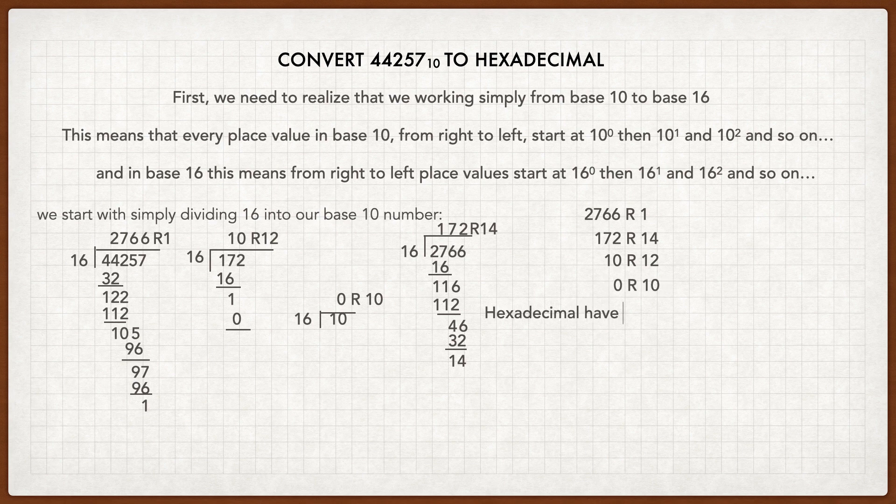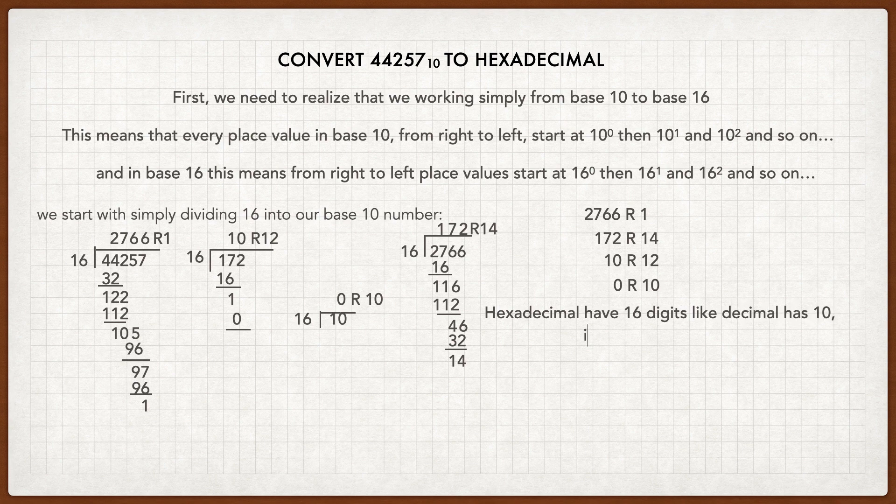Now, hexadecimal has 16 digits like decimal has 10, including the integer 0. So we have 1, 2, 3, 4, 5, all the way up to 15.